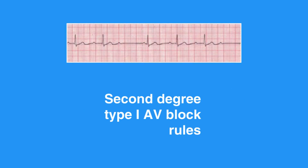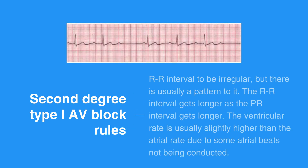Second degree type 1 AV block rules include R-R interval to be regular, but there is usually a pattern to it — the R-R interval gets longer as the PR interval gets longer. The ventricular rate is usually slightly higher than the atrial rate due to some atrial beats not being conducted. The atrial rate is usually normal. P waves are upright and uniform. Most complexes will have a P wave in front of them; however, there will be some that do not. The PR interval gets progressively longer until there is a dropped QRS complex. The QRS complex measures less than 0.12 seconds.